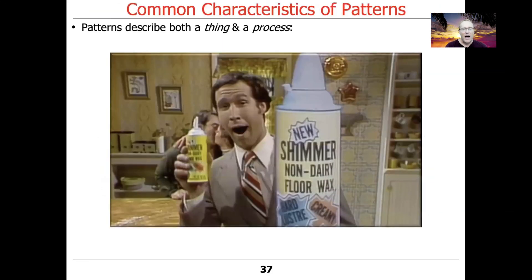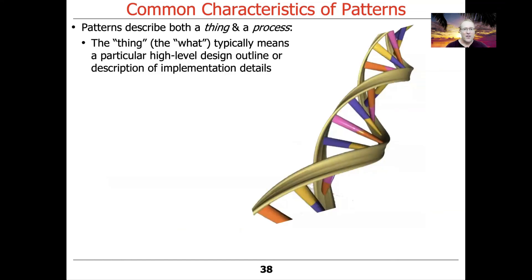A pattern describes both a thing and a process. Reminds me of a famous Saturday Night Live skit from years ago with Chevy Chase where he was talking about the shimmer non-dairy floor wax that was both a dessert topping and a floor wax. Well, a pattern is also multiple things. The thing, which is the what, typically means the high-level design outline or microarchitecture that describes the way in which the various roles and responsibilities or classes and objects relate to each other.